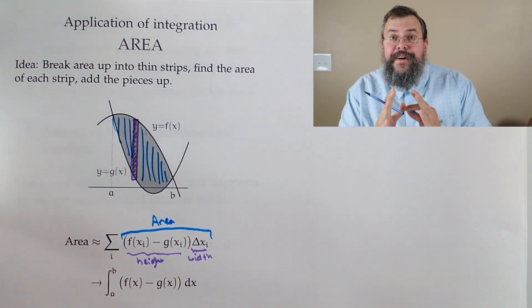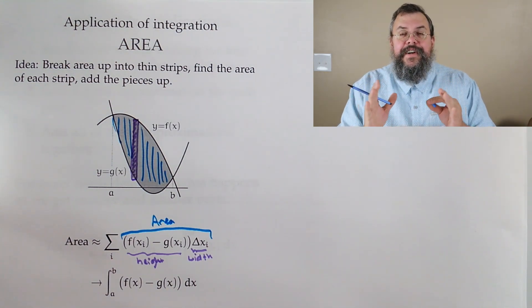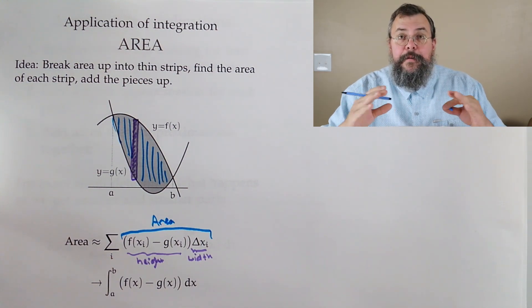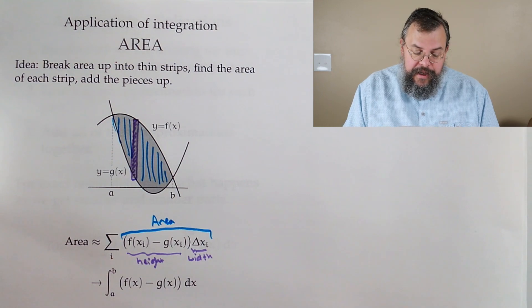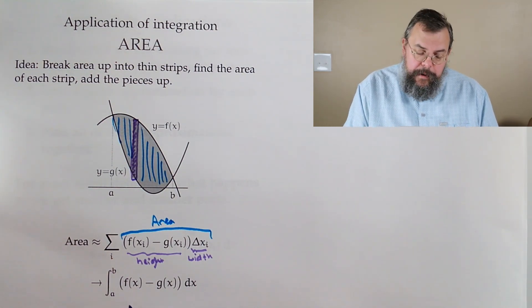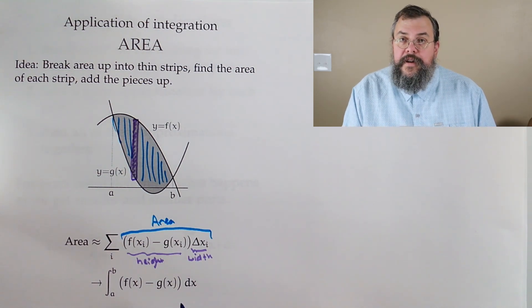So, there's always an error. But, again, as we get smaller and smaller slices, our error gets smaller and smaller. And therefore, in the limit, it will go away. So that is how we get our area. Our top function, minus our bottom function, times our little dx, our width.